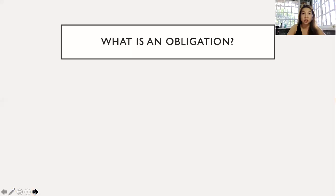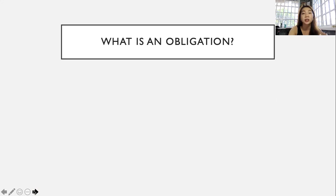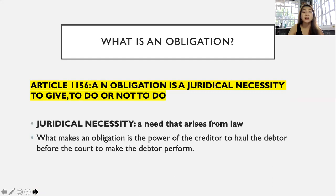Title One is Obligations. The first question is: what is an obligation? The law on obligations and contracts is a kind of positive law which deals with the nature and sources of obligations, as well as the rights and duties arising from agreements and contracts. It is important to know that in every obligation, there is a general principle on human relations found in Article 19 of the Civil Code, which says that every person must, in the exercise of his rights and in the performance of his duties, act with justice, give everyone his due, and observe honesty and good faith. Article 1156 states that an obligation is a juridical necessity to give, to do, or not to do.